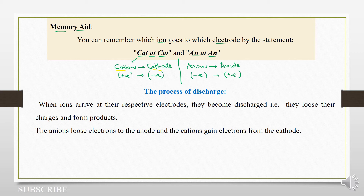Then we have an-an, hopefully you can see this. So an-an, cat-cat — it can help you know which ions go to which corresponding electrodes.